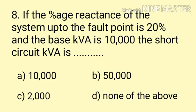Question number 8. If the percentage reactance of the system up to the fault point is 20% and the base KVA is 10,000, the short circuit KVA is dash. Isme dekho base KVA given hai 10,000, percentage reactance up to the fault point hai 20%. Short circuit KVA ka formula hai: base KVA × 100 / percentage reactance = 10,000 × 100 / 20 = 50,000. The correct answer is Option B.